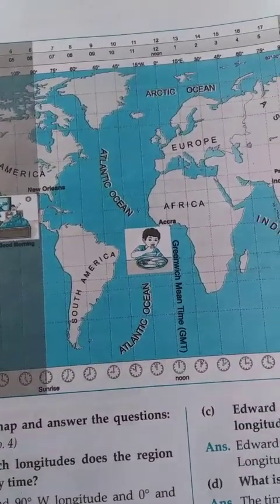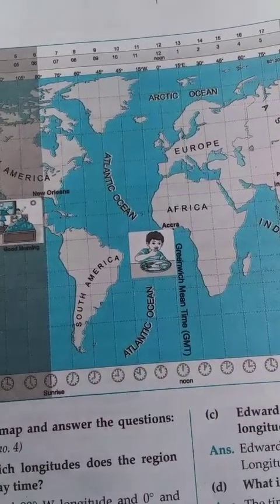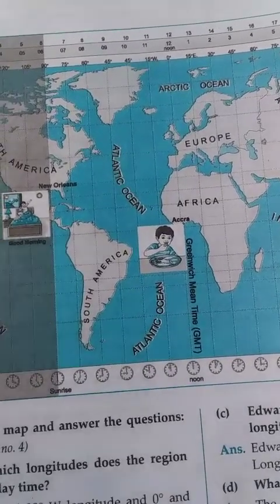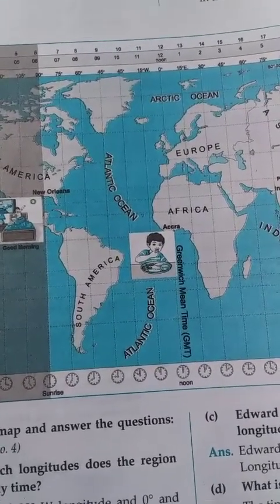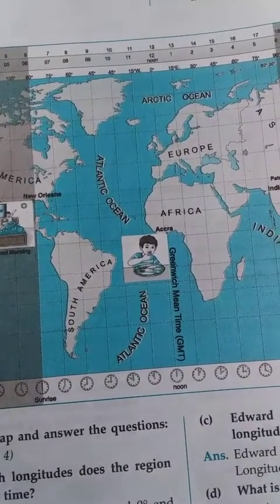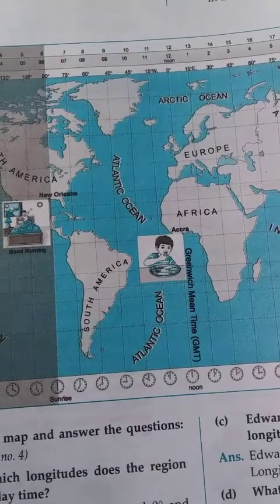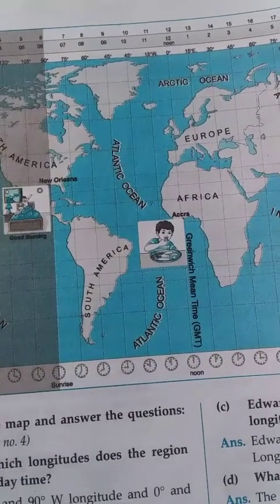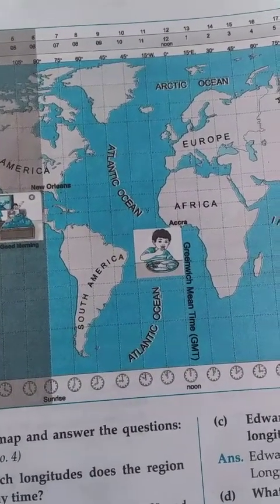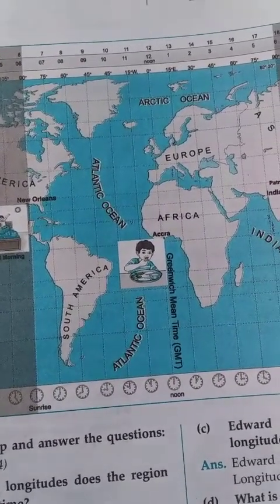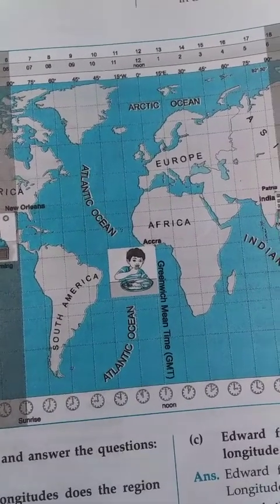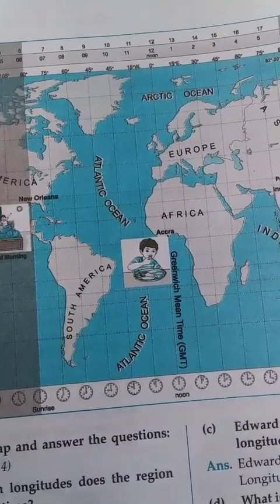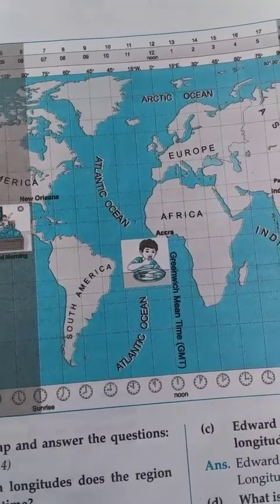Thus, we have studied that local time is different in different parts of the world. The daily routine of people is determined according to the local time in those places. Figure 1.3 shows the local times of different longitudes.